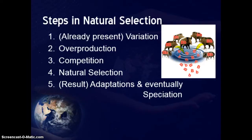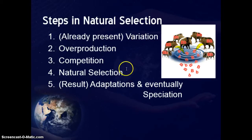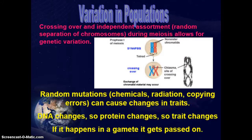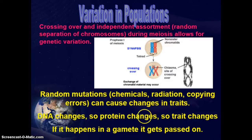Micro and macroevolution happen in the following steps. First, you already have some variety in your gene pool — different types of genes that came about through mutations. Then you go into overproduction, competition, natural selection, and the end result is adaptations, and eventually speciation. Variation comes from crossing over — where chromosomes swap parts — and independent assortment, giving you random chromosomes from each parent. Random mutations also cause changes in traits. Whenever you change the DNA, that changes the protein it makes, which changes the trait you see. If this happens in a gamete — an egg or sperm cell — it can be passed on to children.